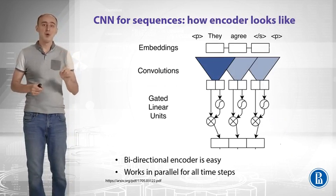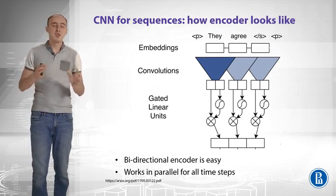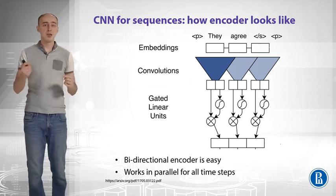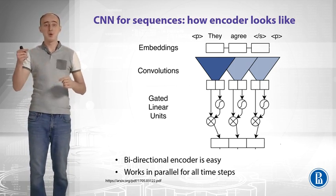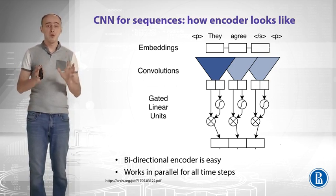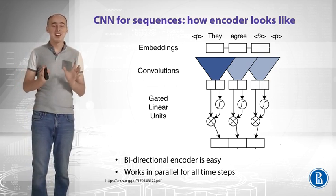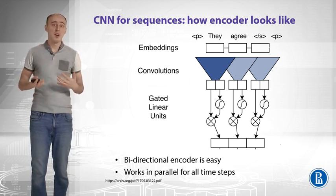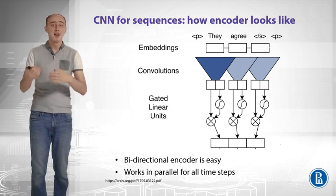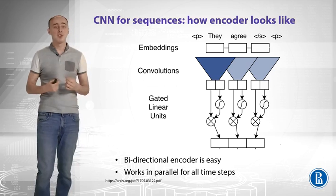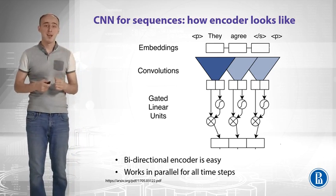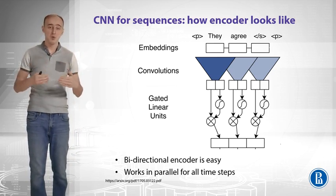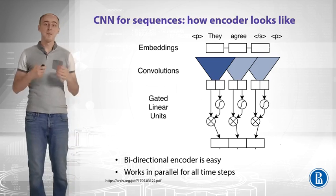One more thing worth noting: in sequence-to-sequence tasks you typically want a bidirectional encoder that reads the sequence from left to right and right to left. With convolutions, you can make the convolutional filter symmetric so it looks at both left and right context simultaneously. This makes it very easy to build a bidirectional encoder with CNNs, and it still runs in parallel with no dependence on a hidden state.